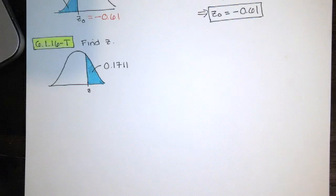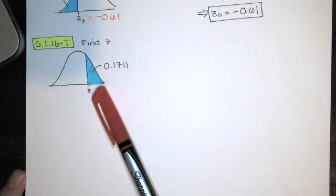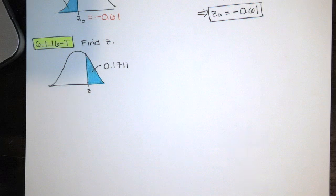In this video, we solve problem 6.1.16-T from Essentials of Statistics, 6th edition by Mario Triola. We're asked to find this z-score, and we're told that the area to the right is 0.1711.